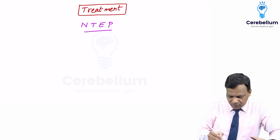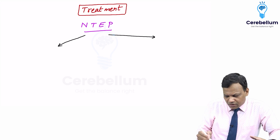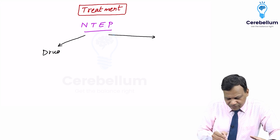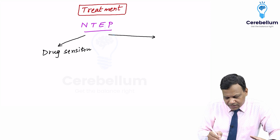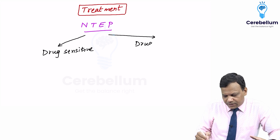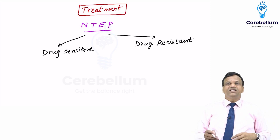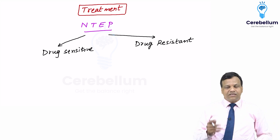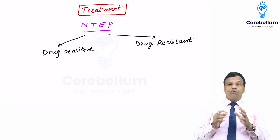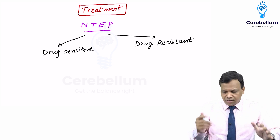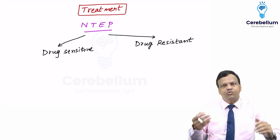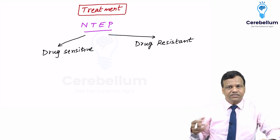According to this program, we treat TB based on two categories: whether it is drug sensitive or drug resistant. Drug sensitive means the mycobacterium is sensitive to all the first-line drugs. Drug resistant means it is resistant to any of the first-line drugs.